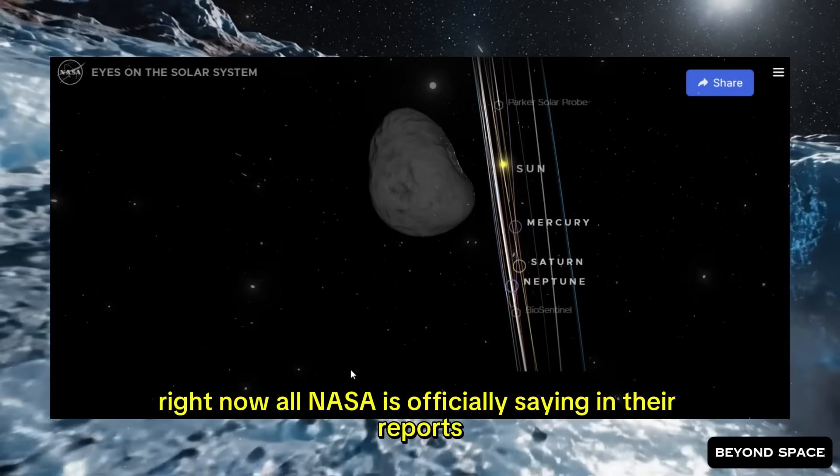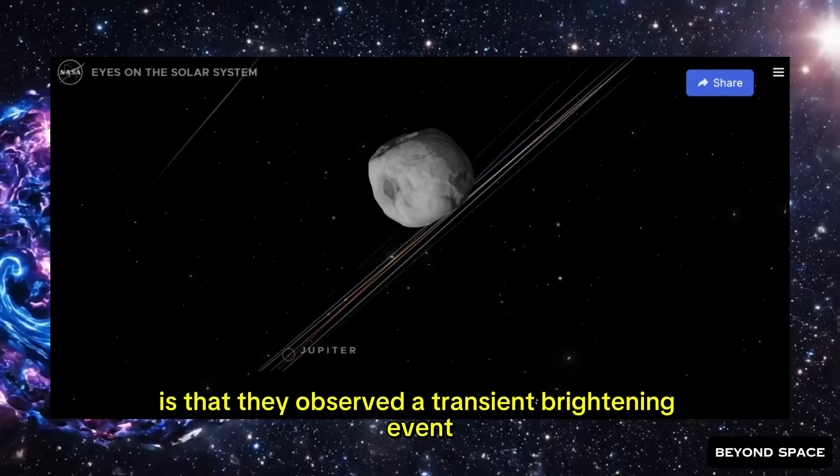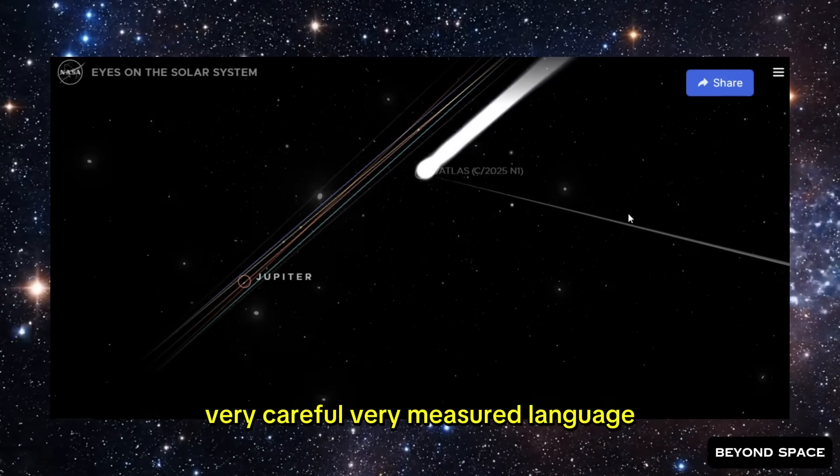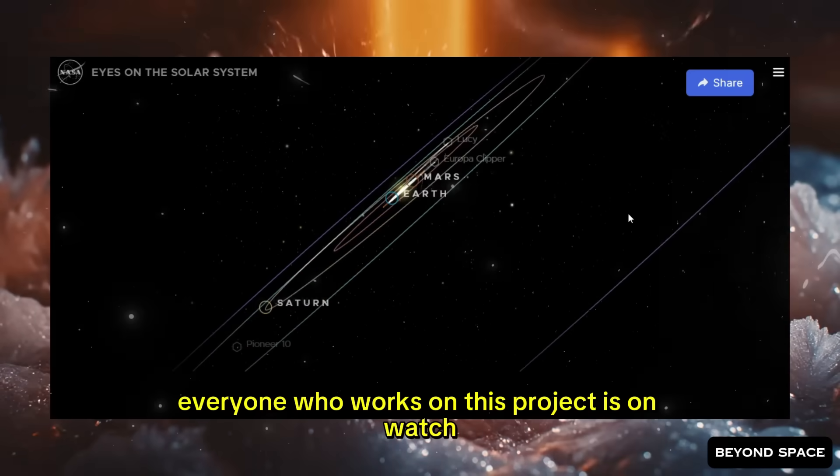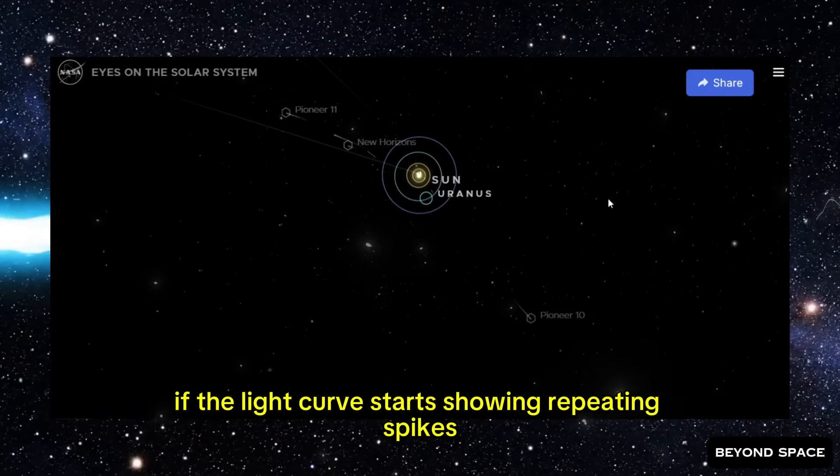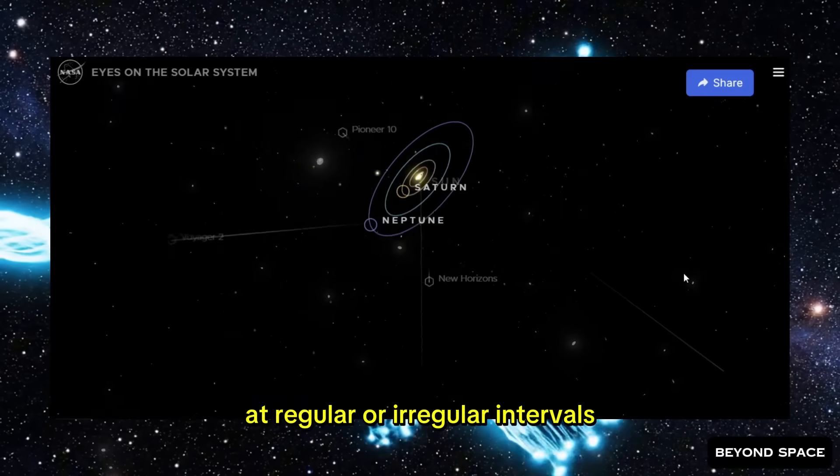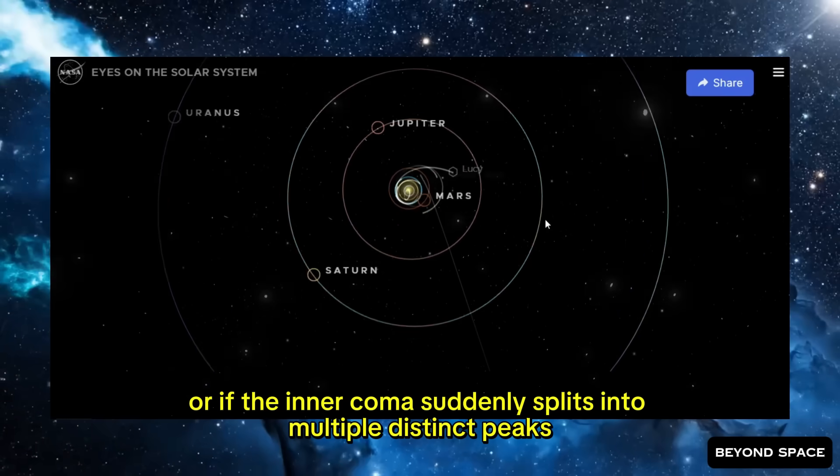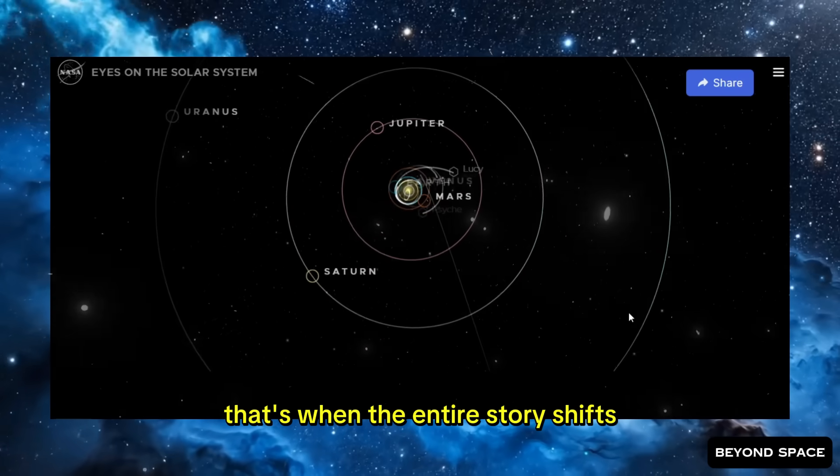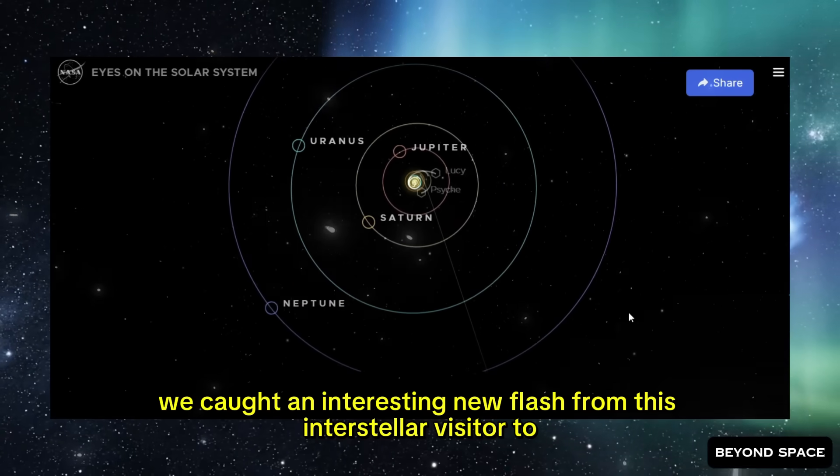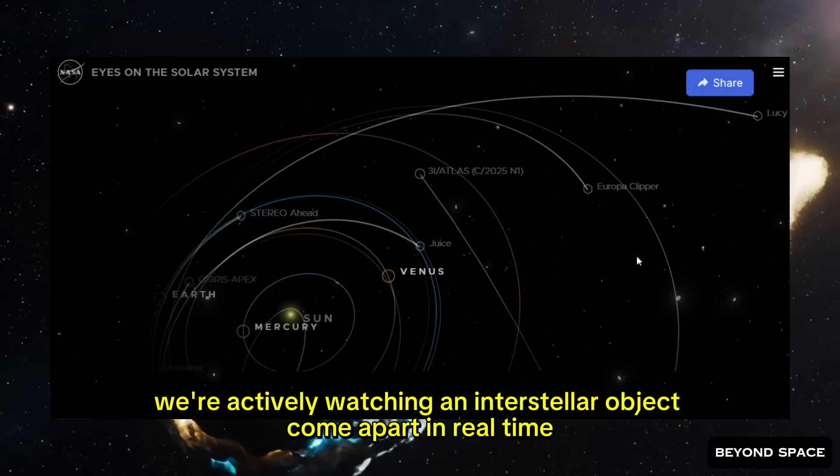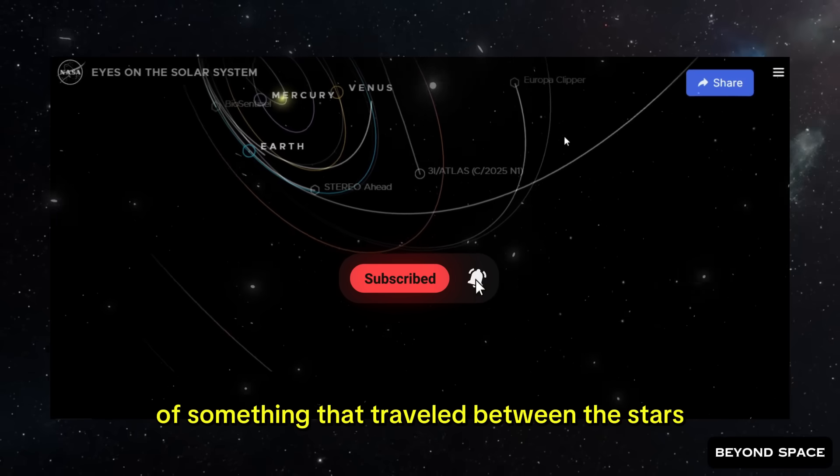Right now, all NASA is officially saying in their reports is that they observed a transient brightening event, a flash, that appears to be intrinsic to the comet itself. Very careful, very measured language. But unofficially, everyone who works on this project is on watch now. Eyes are glued to the data feeds. Because if another flash hits, if the light curve starts showing repeating spikes at regular or irregular intervals, or if the inner coma suddenly splits into multiple distinct peaks instead of one central concentration, that's when the entire story shifts. It goes from, hey, we caught an interesting new flash from this interstellar visitor to, oh no, we're actively watching an interstellar object come apart in real time. We're witnessing the breakup of something that traveled between the stars.